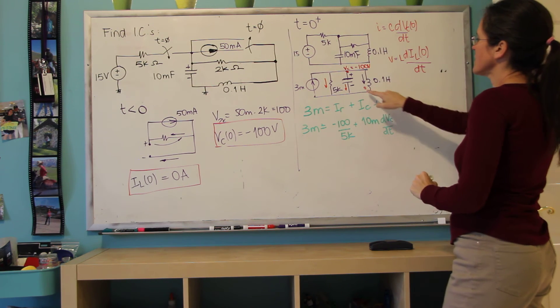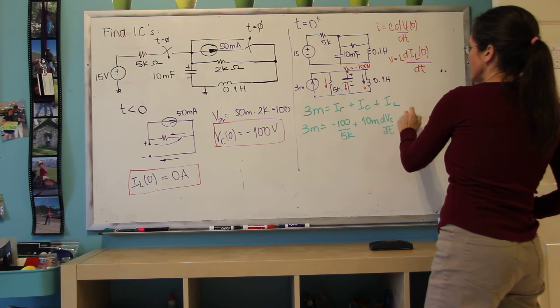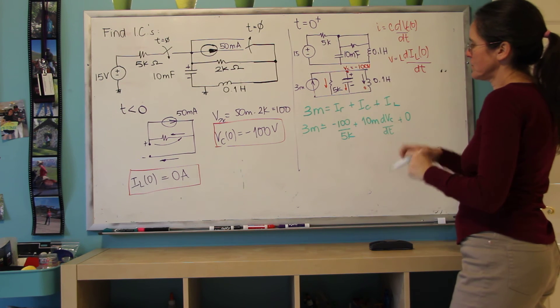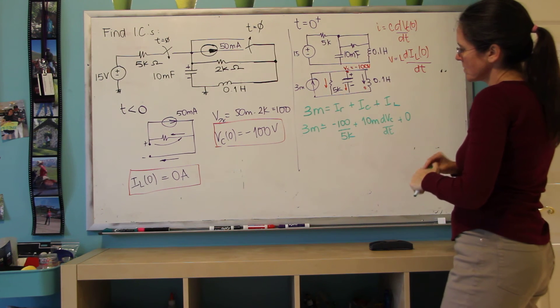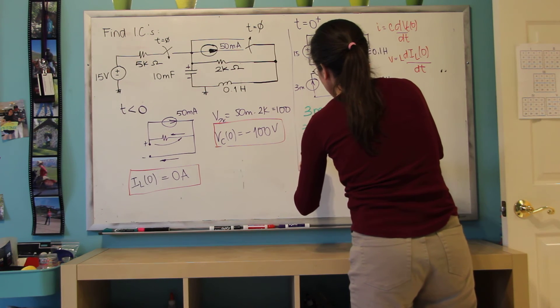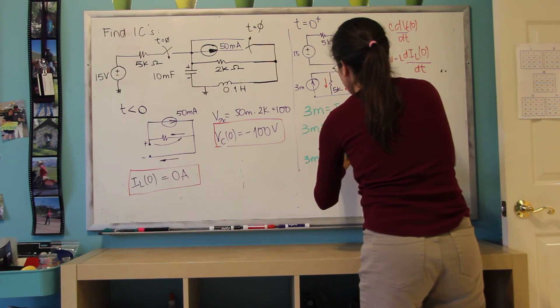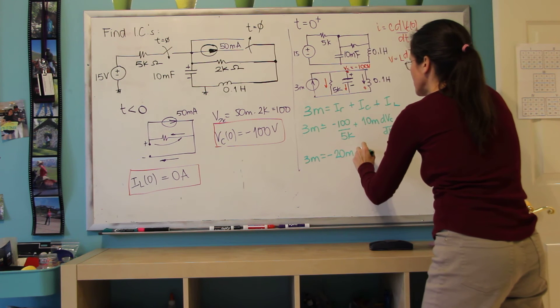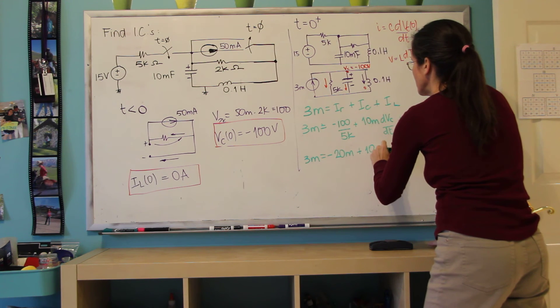And the current through the inductor at zero plus is zero, as we have written here. So this is 20 milli, 3 milli equals minus 20 milli plus 10 milli dvc dt.